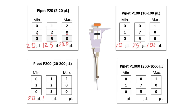The first reading here is going to be 20 microliters, and the second one is 125 microliters. Compare with the P20, where we had 12.5 microliters — here the same numbers mean 125 microliters, because there is no decimal point on this pipettor. And if the P20 showed 20 microliters, here we are going to have 200 microliters.